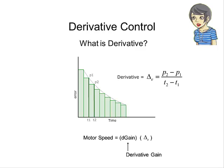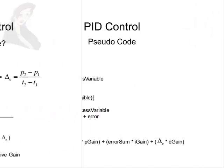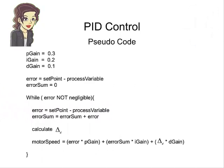Similar to the other two controls, here we determine the speed of the motor by multiplying the derivative value by a constant, called derivative gain, or d-gain. Here's the pseudocode for using proportional, integral, and derivative control. We're still using 0.3 for p-gain and 0.2 for i-gain. And now, we're also using 0.1 for d-gain. But again, these values are problem specific and have to be determined experimentally.